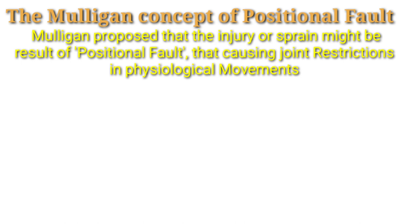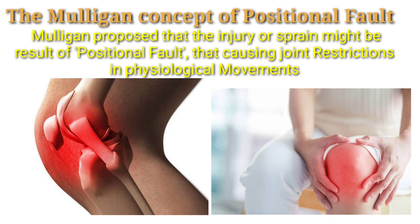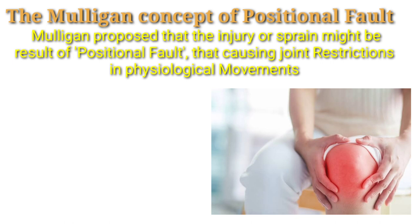If we talk about the concept of positional fault, Mulligan proposed that the injury or sprain might be the result of positional fault, causing joint restriction in physiological position or movement. Mulligan has given a concept that if someone has a positional fault, that may be the injury or sprain, or might be causing joint restriction in physiological movement.